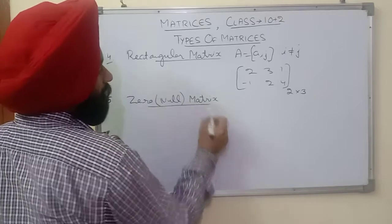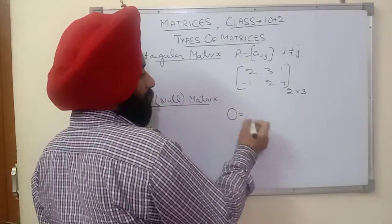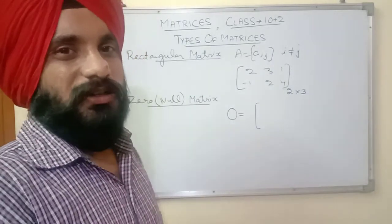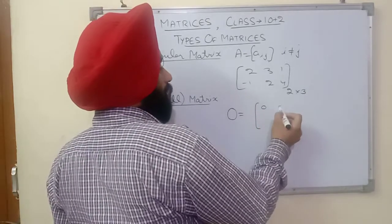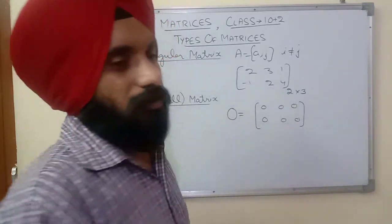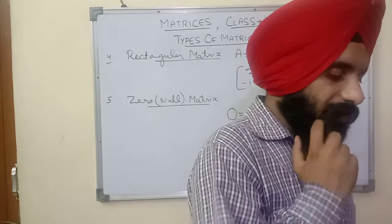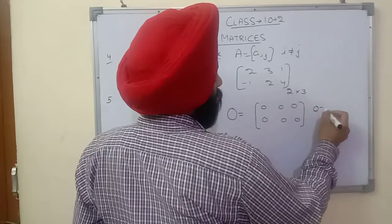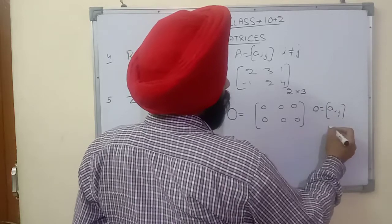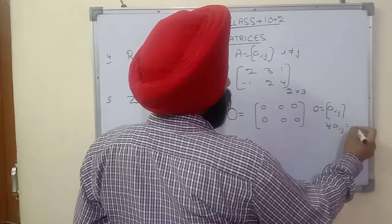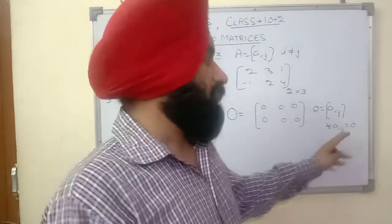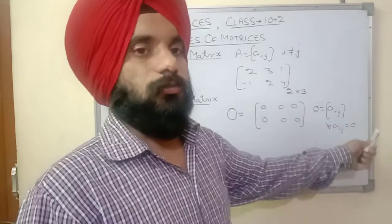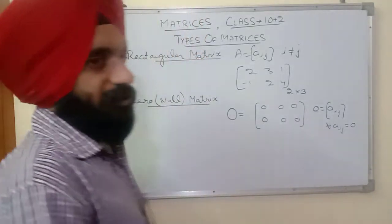Next is the zero matrix, also called the null matrix. This is the matrix whose every element is zero. A zero matrix can be rectangular or square — whatever its shape, it is a zero matrix if every element of the matrix is zero. Formally, for all i,j: a_ij = 0.